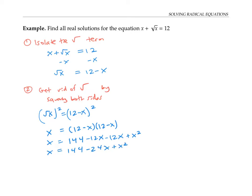Subtracting x from both sides gives zero equals 144 minus 25x plus x squared. That's a quadratic equation. I'll rewrite it in standard form: x squared minus 25x plus 144 equals 0, with no radical signs left.